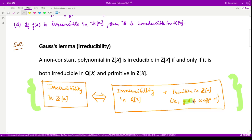What do you mean by primitive polynomial? That means the GCD of all the coefficients of this polynomial is equal to 1. So they are saying if it is irreducible in Z[x] that implies it is irreducible in Q[x] as well as it is primitive in Z[x].